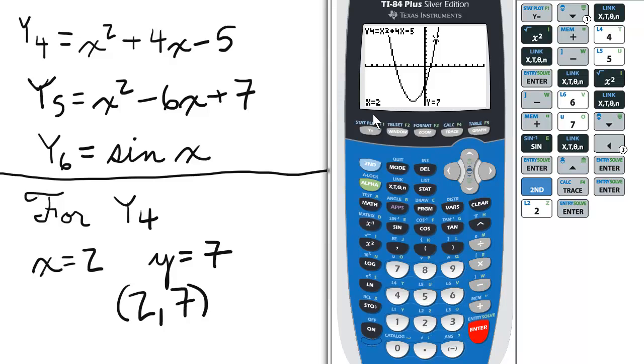Now it gives us the coordinate pair (2, 7). You can repeat this for any domain value on the graph. Be warned, however, that if there are multiple functions graphed on the same screen, the calculate function works for the first function selected.